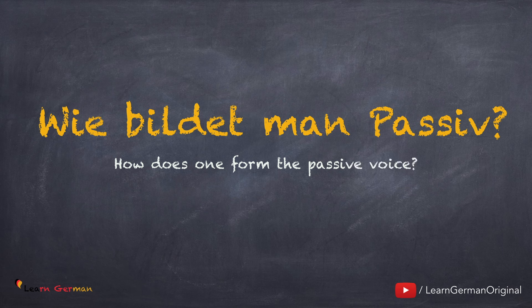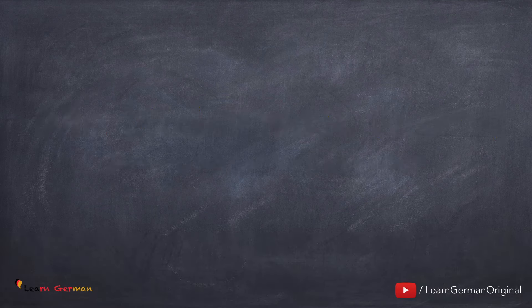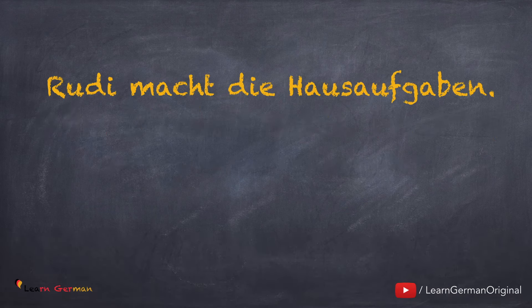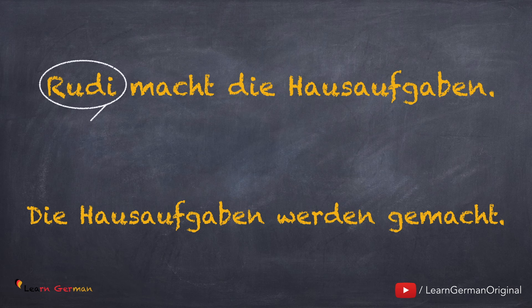Wie bildet man Passiv? In letzter Lektion haben wir gelernt: Passivbildung ist am einfachsten mit Verben, die immer ein Akkusativobjekt haben. Hier ist ein Beispiel: Rudi macht die Hausaufgaben. In Passiv: die Hausaufgaben werden gemacht.